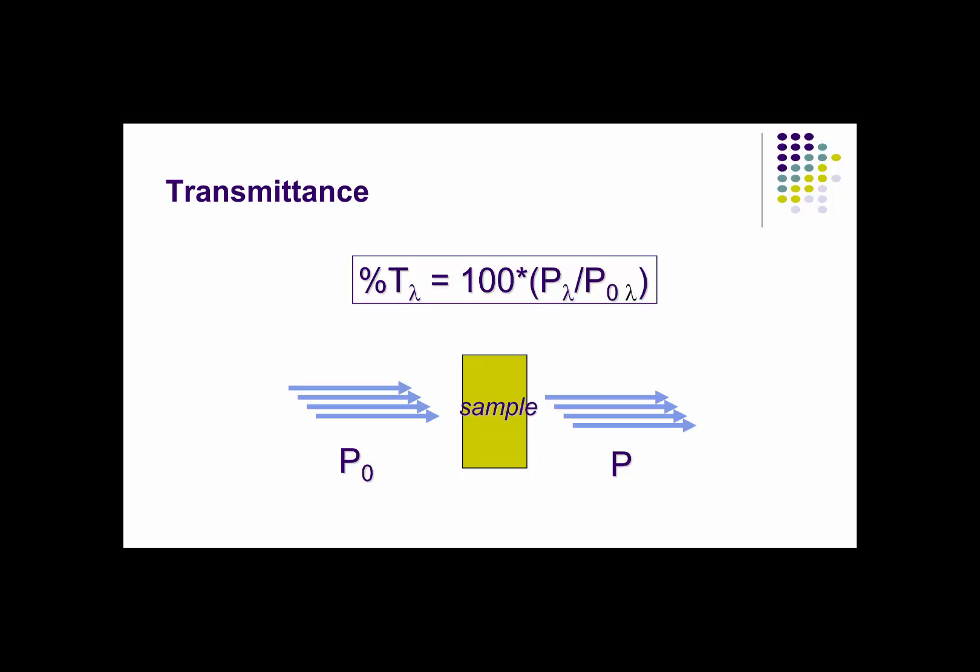If we know the number of photons we use to radiate our sample, and we can measure the number of photons transmitted, then that ratio, represented as a percentage, would be percent transmittance, or 50% in our example.